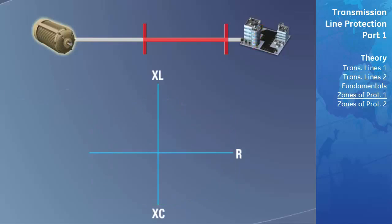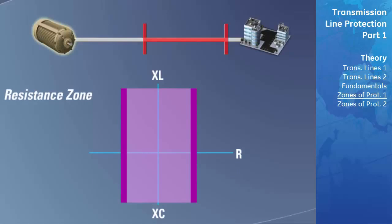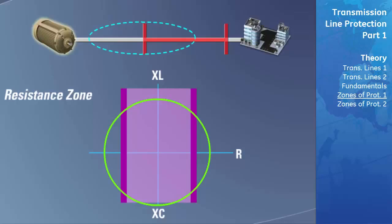The next zone of protection is a resistance zone, used to detect when the impedance of the fault has a very high inductive component. If the fault does have a high inductive impedance, this indicates there is very little or no resistive load at the end of the transmission line and the fault is likely located on the transmission line. This type of zone is usually never used to trip a transmission line on its own but is normally used to supervise another distance zone. For example, the resistive zone can verify that a fault is actually on the transmission line because the impedance is mostly inductive, giving the impedance zone permission to trip.